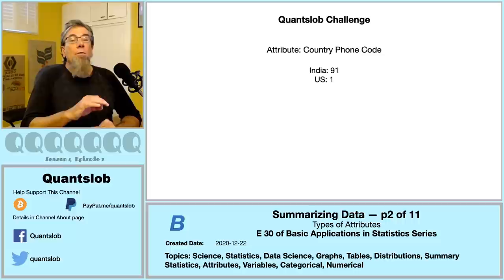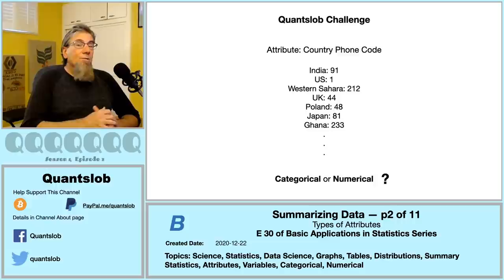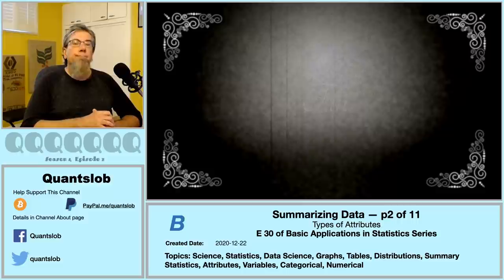Now for our QuantSlob challenge: consider the attribute 'country phone code' — here's a small handful of examples. What do you think — categorical or numerical? We're going to pick this up in part three along with lots of other exciting stuff. Thank you very much for tuning in.